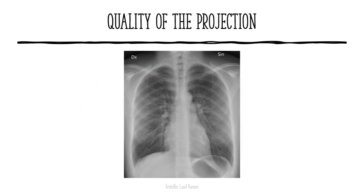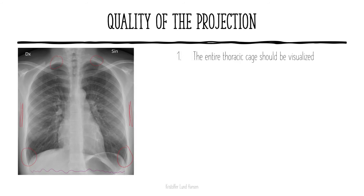Then we have to assess the quality of the projection. The first thing we do is to see if we have the entire thoracic cage visualized. To see the entire thoracic cage, we have to see both the sinuses at the bottom, also called the costophrenic angles, and the first ribs at the top and some of the soft tissues on the side. We don't want to see too much of the abdomen — only a small part at the bottom — as too much abdomen means we see less of the lungs and can overlook important pathological changes.